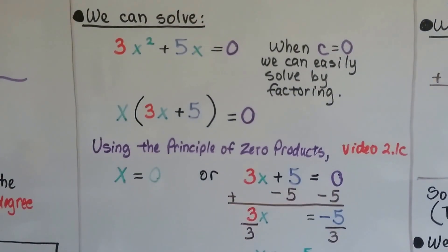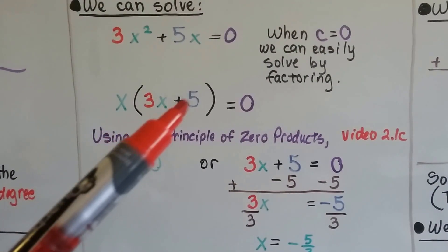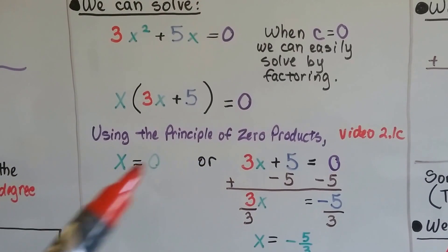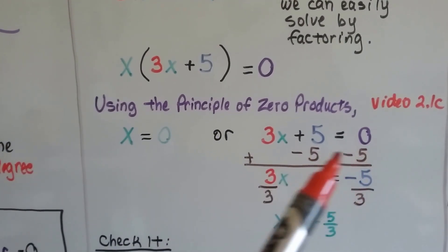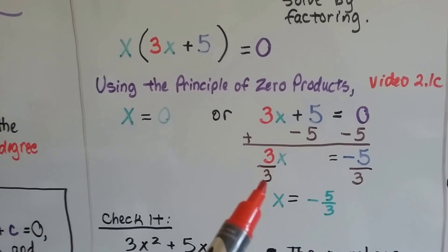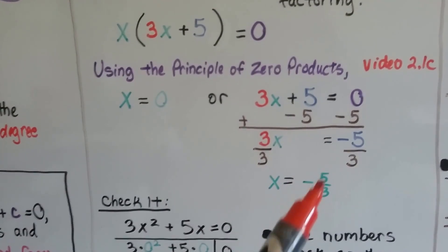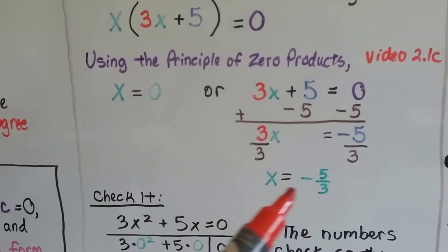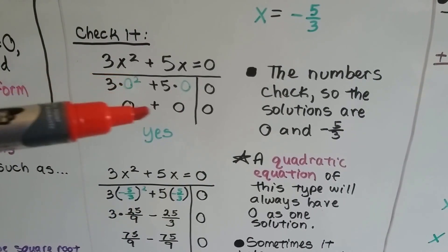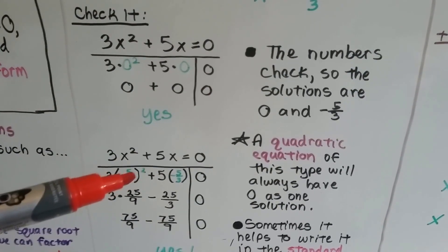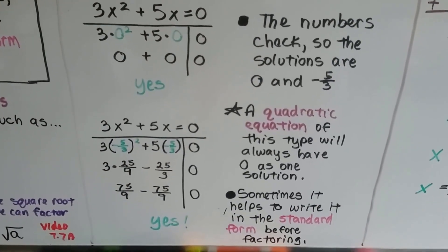And then using the principle of zero products, we talked about that in 2.1c, we can split this apart to x equals zero and 3x plus 5 equals zero. We can isolate x on this side by using the addition property by adding a negative 5 to each side, and then we can use the multiplication property to divide both sides by this coefficient 3. So x is isolated as a negative 5 thirds. So we have x equals zero or x equals negative 5 thirds. We check it. We plug it into our original equation with the zero, and that works, and as the negative 5 thirds, and that works. And the numbers check. So the solutions are zero and negative 5 thirds.